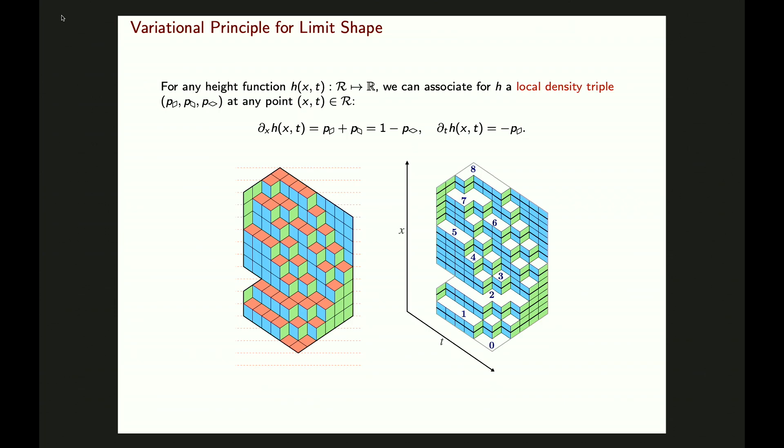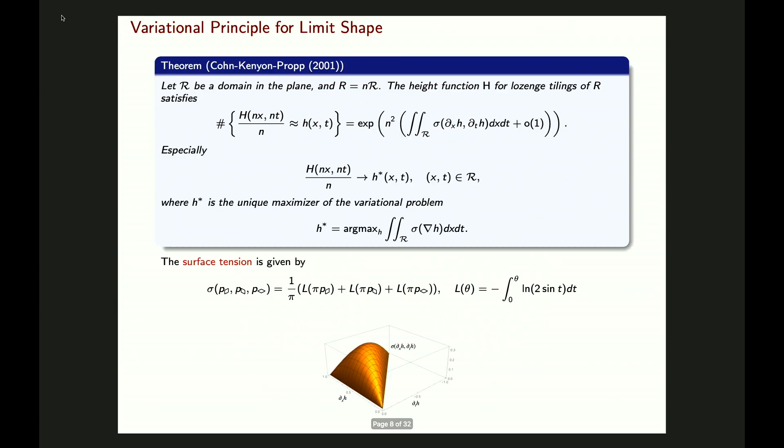Similarly, the time derivative of the height function is given by minus the local density of the green lozenges. So there is a bijection between the height function and those local densities — you can recover one from each other. As proven by Cohn-Kenyon-Propp: given any domain R rescaled by factor n, looking at lozenge tilings of this rescaled region, the number of lozenge tilings satisfies a large deviation principle given by e to the n-squared times the surface tension of the height function.